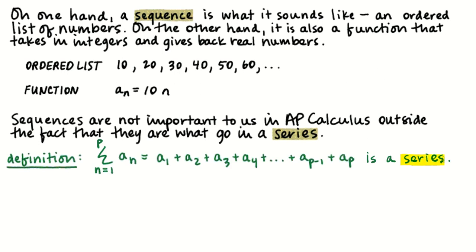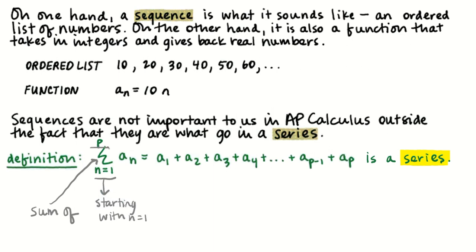This is our definition of a series. If you're already familiar with the large sigma operator, good for you — I'm just going to label the anatomy of a series. That large sigma operator means the sum of a bunch of things. This number here, n equals 1, tells us we're starting with n equals 1, kind of like an integral. Over here is where we stop, also like an integral — we go until n equals p. n is called our index, and the a_n values are the things we're adding together.